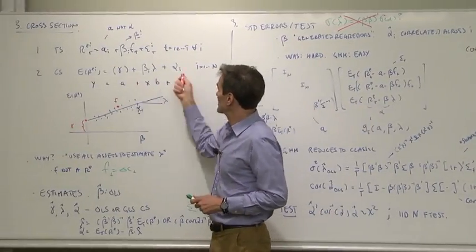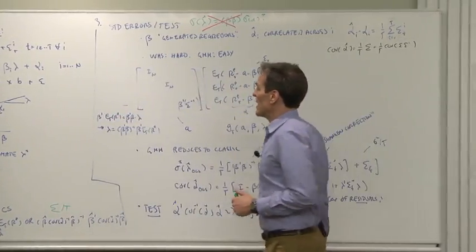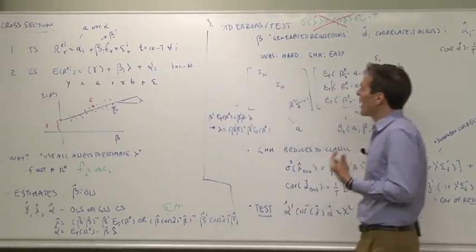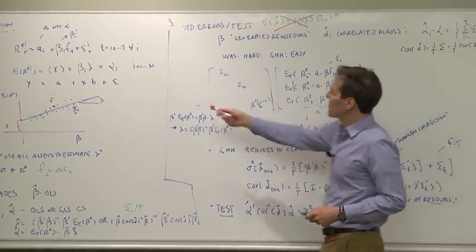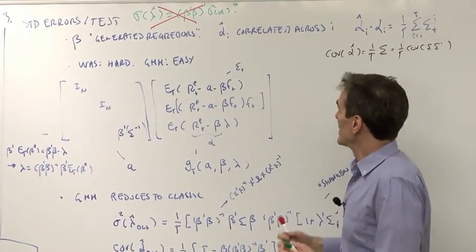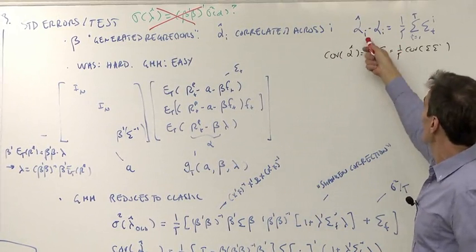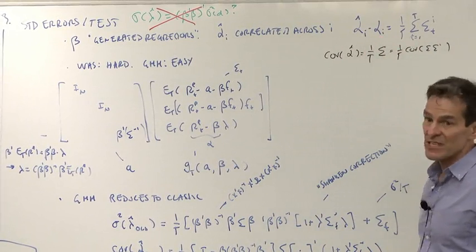The OLS standard errors assume that the error terms are uncorrelated across i, but the alphas are very correlated across i. Why? Where do alphas come from in sample if the alphas in truth are zero? Well, they come from correlations across firms in their residuals.